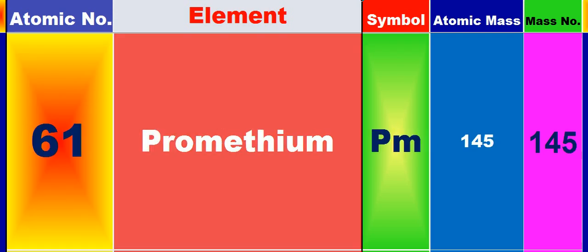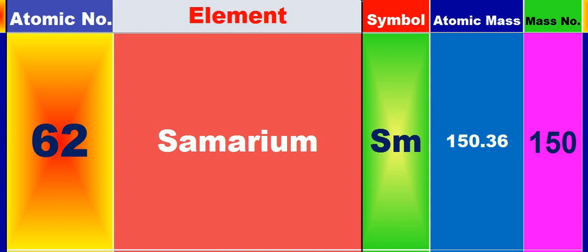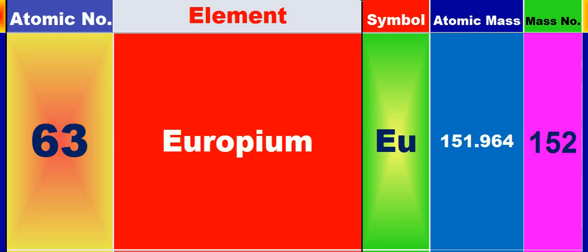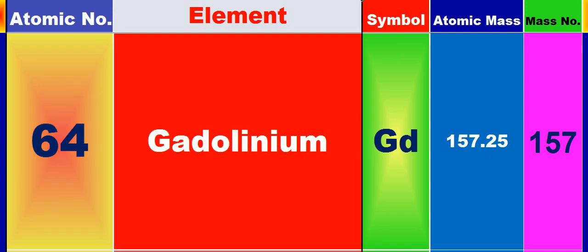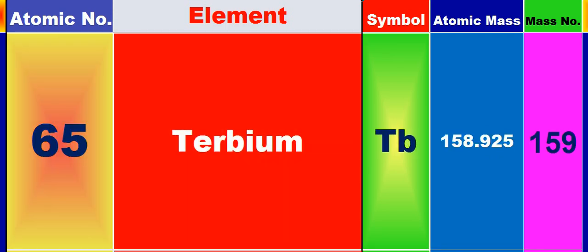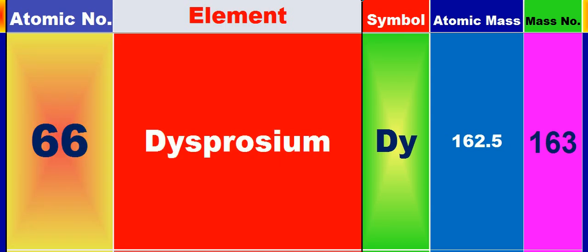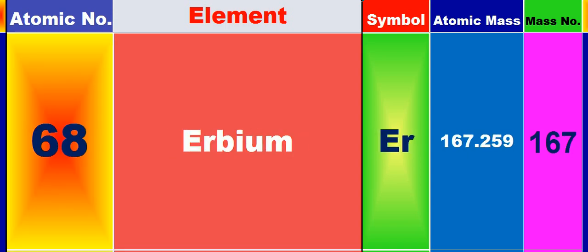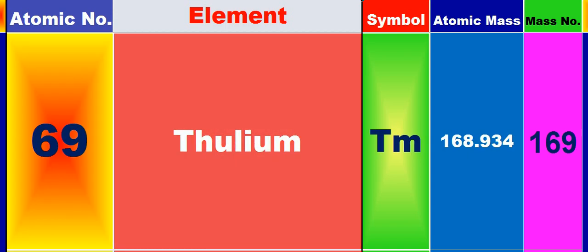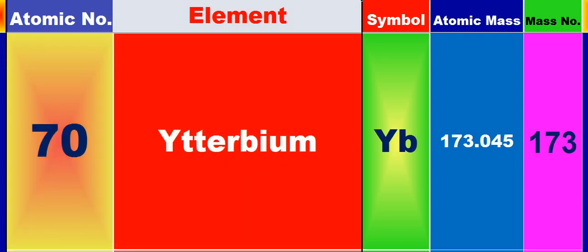61: promethium. 62: samarium. 63: europium. 64: gadolinium. 65: terbium. 66: dysprosium. 67: holmium. 68: erbium. 69: thulium. 70: ytterbium.